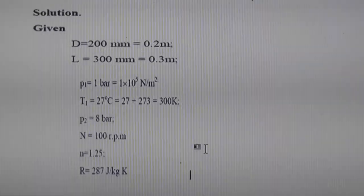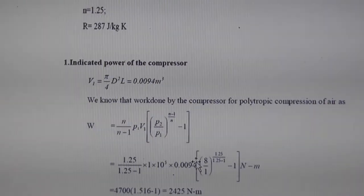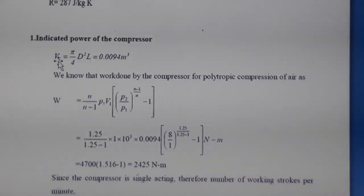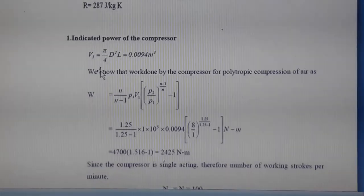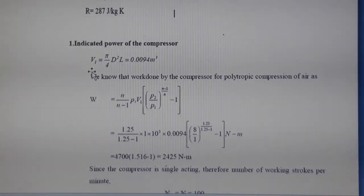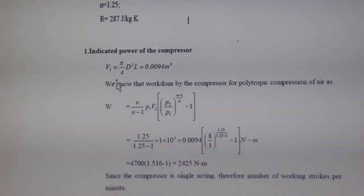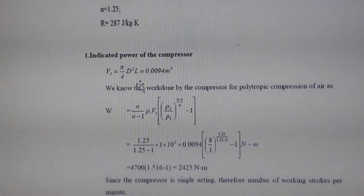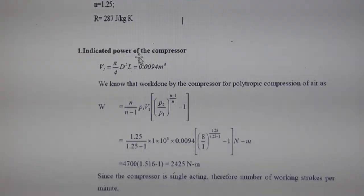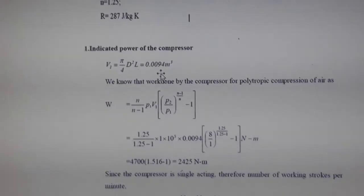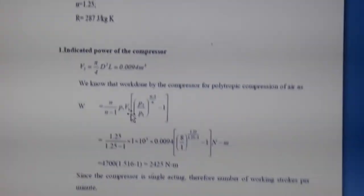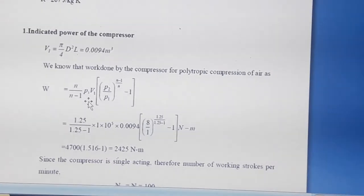In the previous numerical, volume V1 was directly given. Here, diameter and stroke are given, so we calculate V1 using: V1 = (π/4) × d² × L. Substituting the values of d and L, we get V1 = 0.0094 m³.